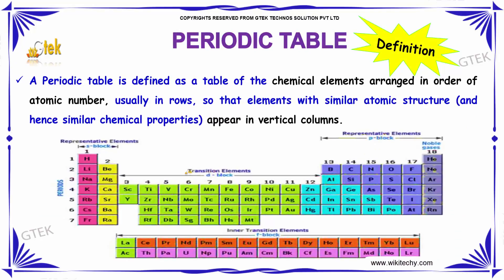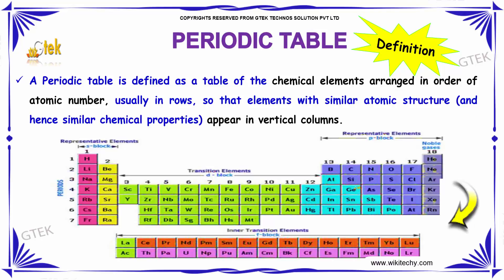A periodic table is defined as a table of the chemical elements arranged in the order of atomic number, usually in rows, so that elements with a similar atomic structure appear in vertical columns. You are able to see the similar properties or put them in a vertical column.